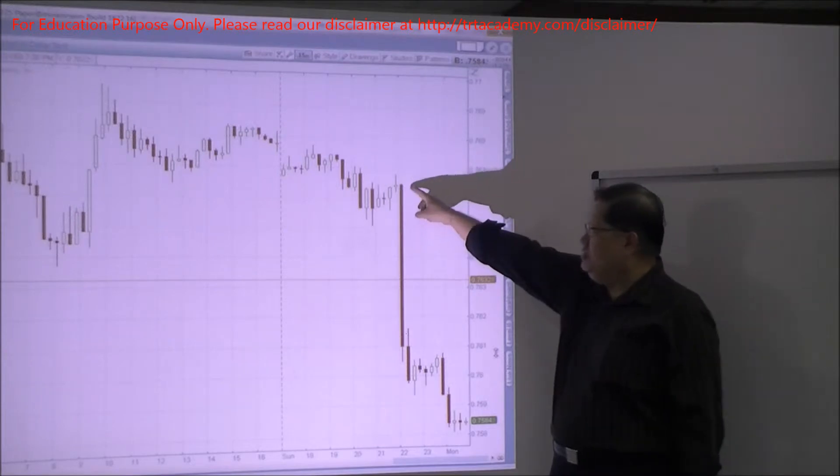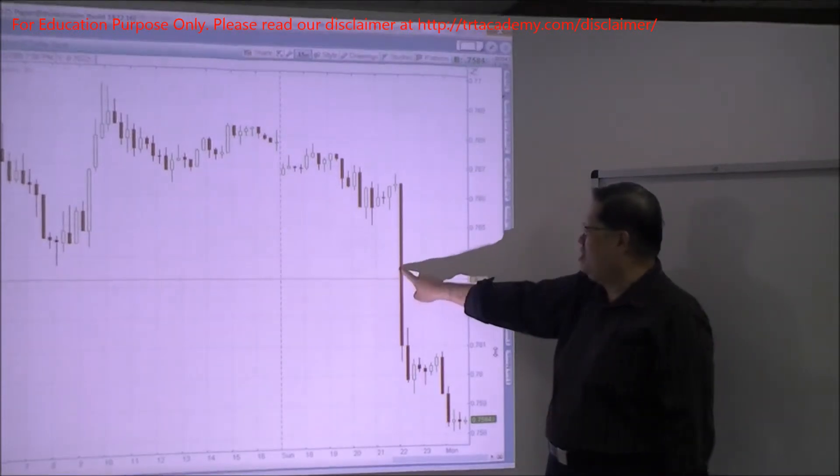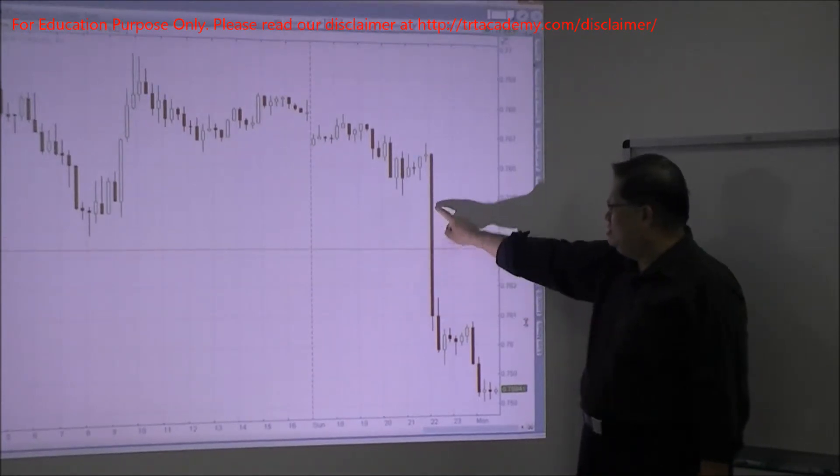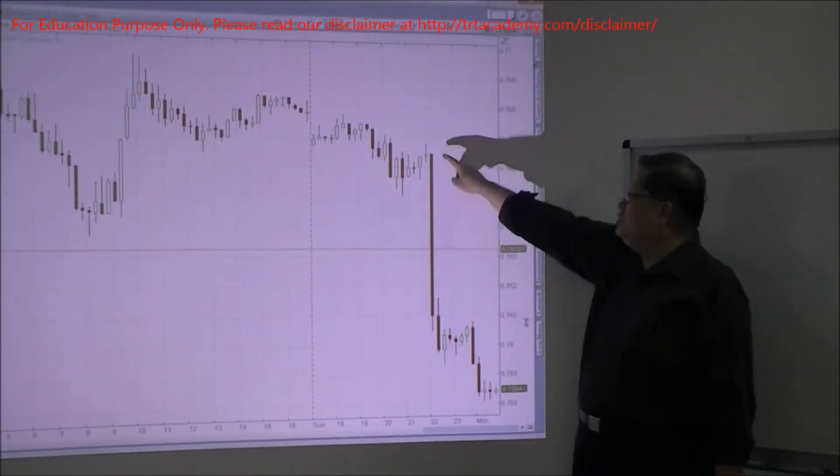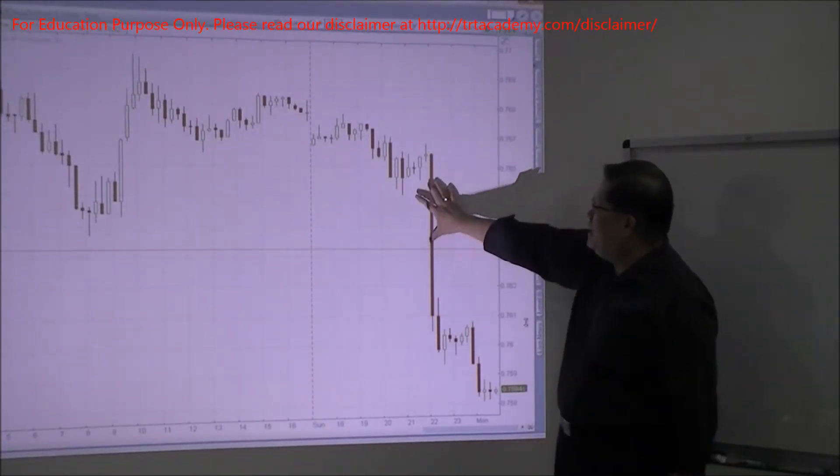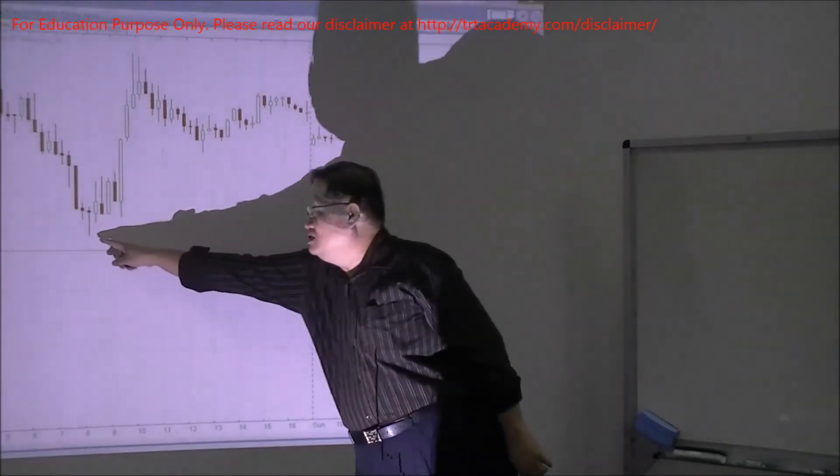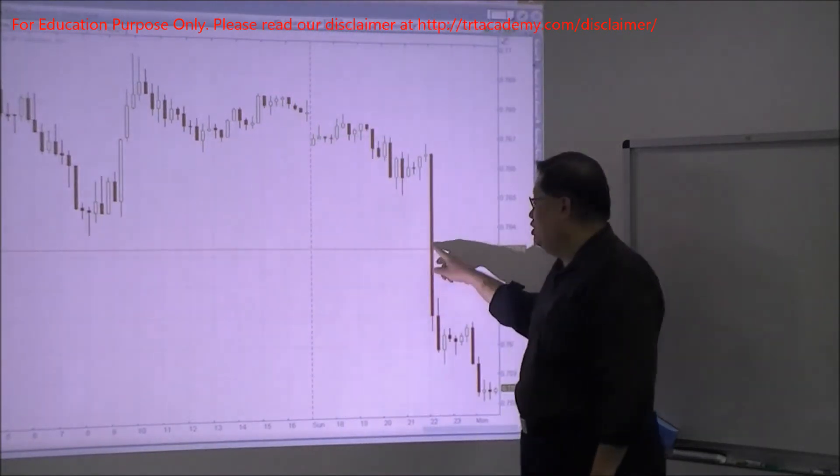So for my ultra students, they will enter right around here. Not here, sorry, around here. Why? Because the chart breaks out in this bar, a humongous superman bar is before it. And not only that, you break the chart low.